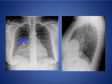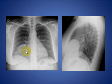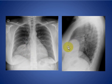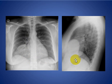Here we see a large mass at the right cardiac border, silhouetting with the right cardiac border, indicating it is anteriorly located. The differential diagnosis of a right cardiophrenic mass includes Morgagni hernia.